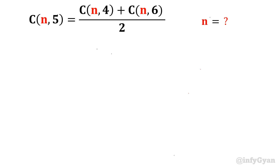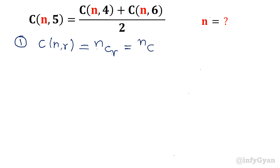Let's get started, but before that I will share one concept of CnR. What does it mean if someone is writing CnR? That means it is one of the formulas of permutation combination, that is NCR. It can be written in different ways. The formula is N factorial over R factorial into N minus R factorial.